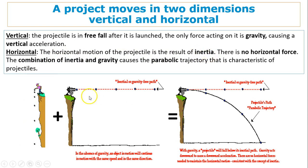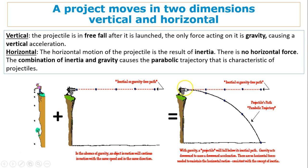In the horizontal direction, motion is due to inertia. When you give it a push at the beginning, it moves horizontally. There is no horizontal force and no horizontal acceleration, so it moves with constant velocity. The combination of vertical and horizontal motion gives you the parabolic path.